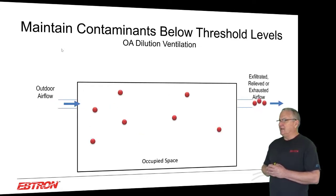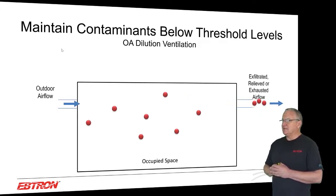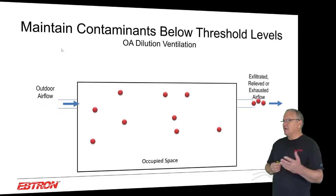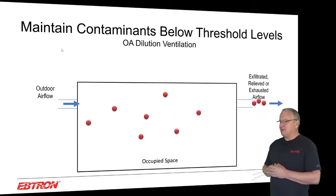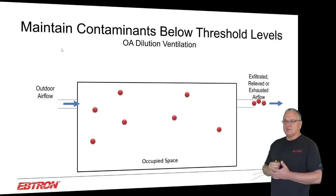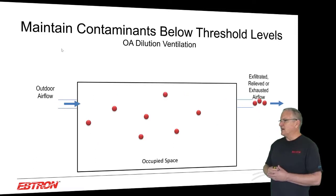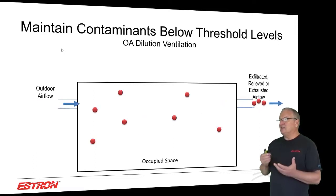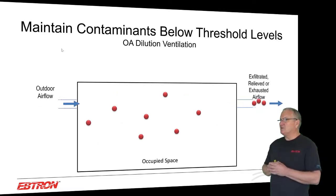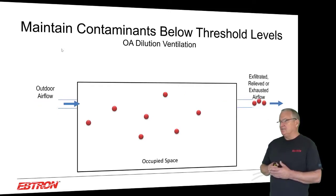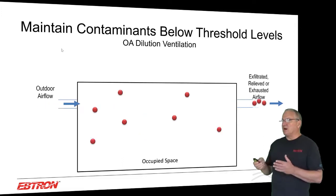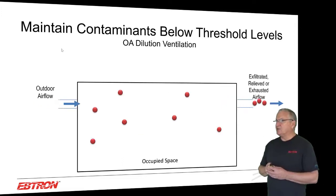What we can do is dilute it. We take outdoor air, bring it into a space, and it's going to dilute whatever contaminants are in the space, including COVID. They'll either be exfiltrated or exhausted out of the building, and you will reach some type of steady-state level of contaminants by bringing in outdoor air. The question is really what the proper amount of outdoor air is.